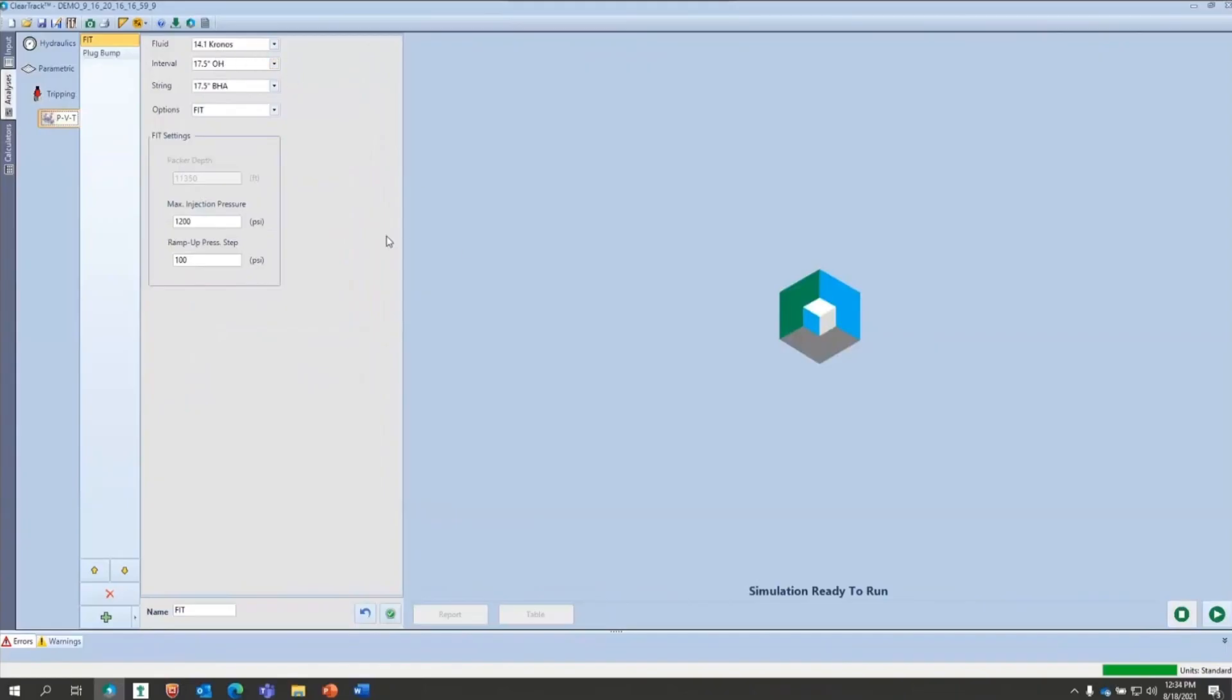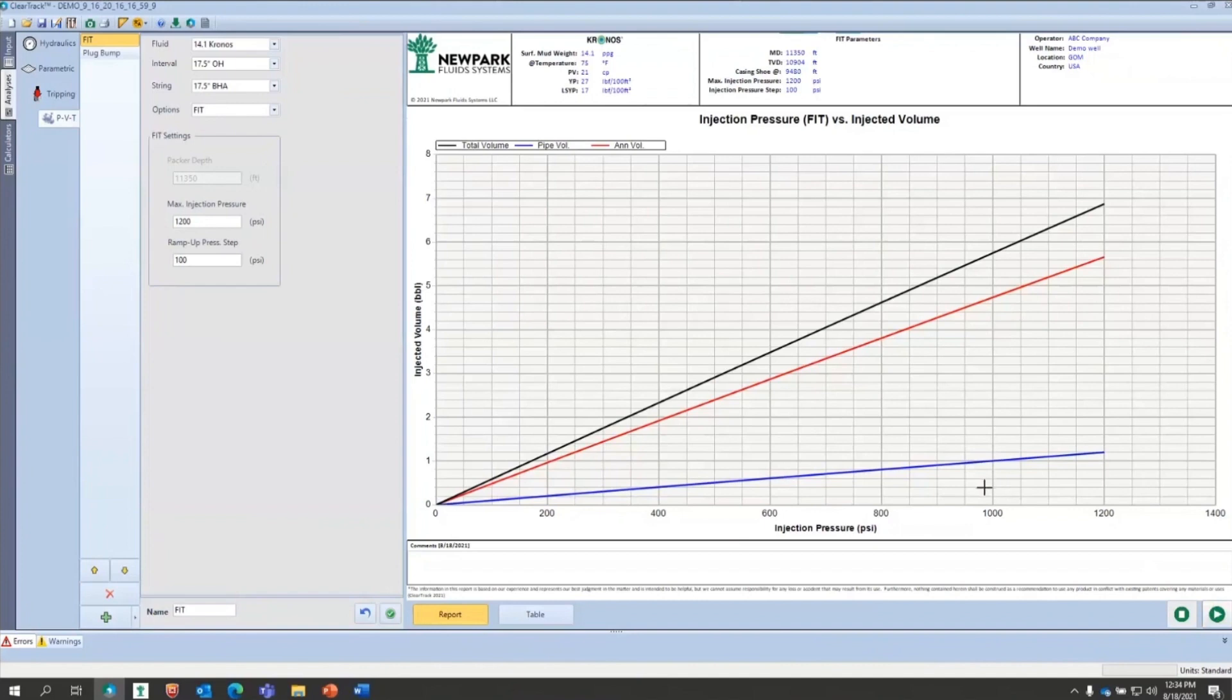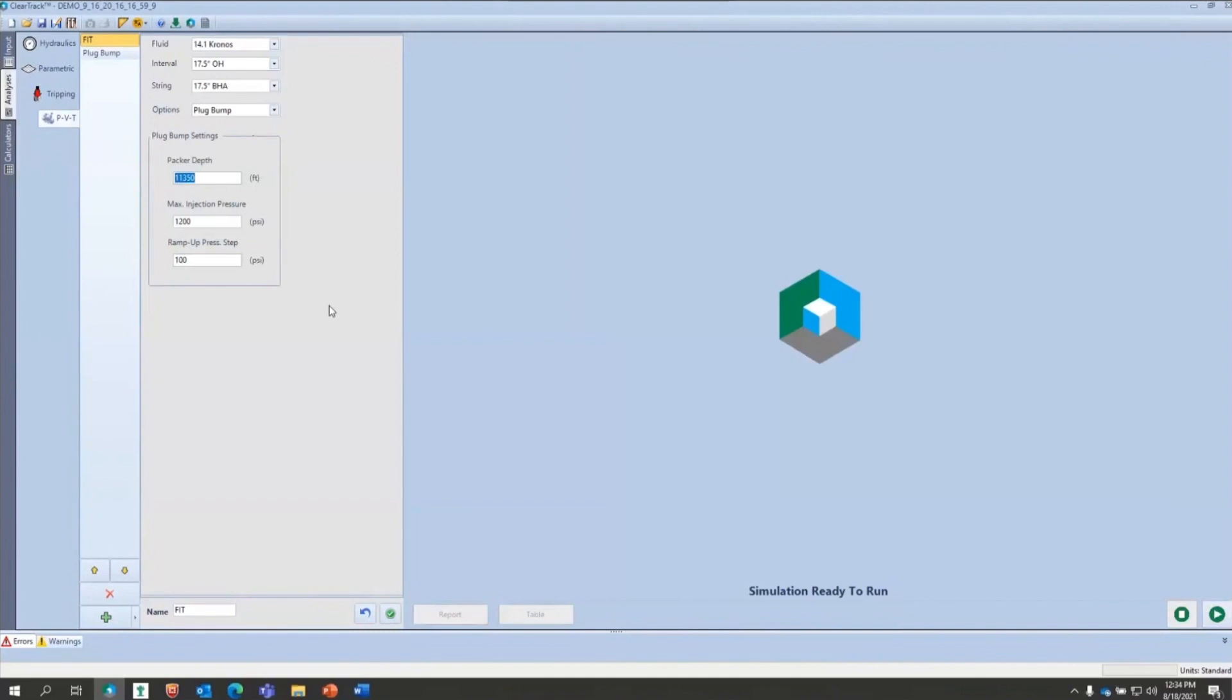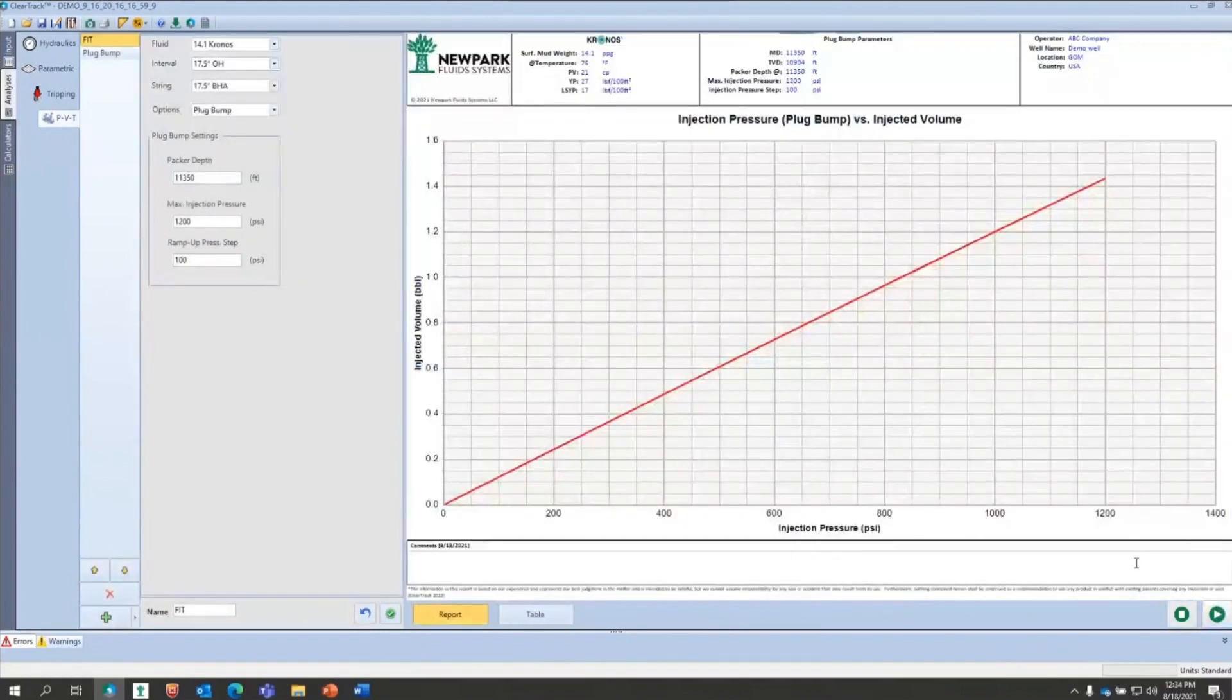One final feature of ClearTrack is building on the PVT data that's already embedded in the software and the database, looking at the synthetic base fluid compressibility, especially in deep water applications. You could use it for land, you can use it for offshore, but what we see the biggest difference is in deep water operations where you go from 40 degrees Fahrenheit on the seafloor, sometimes even cooler, to wells that can go down to 300, 350 degrees Fahrenheit bottom hole temperature.